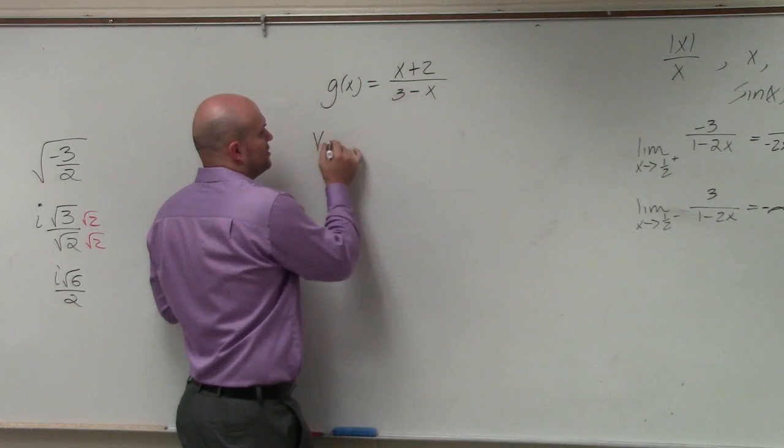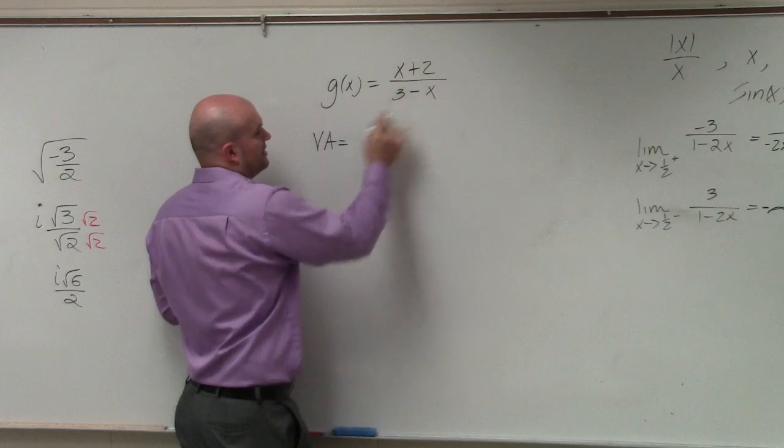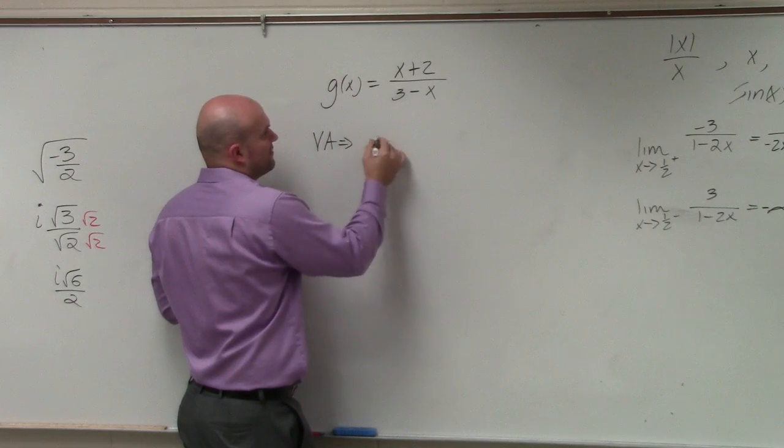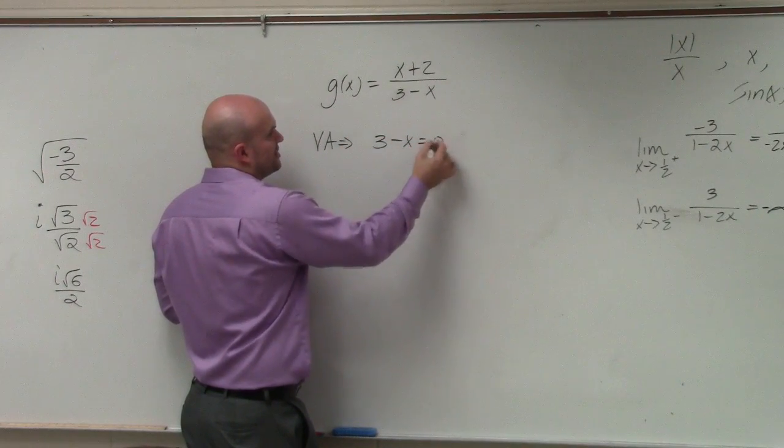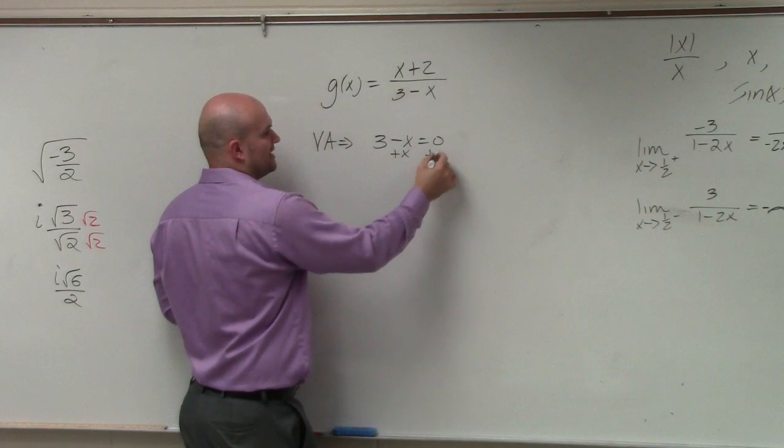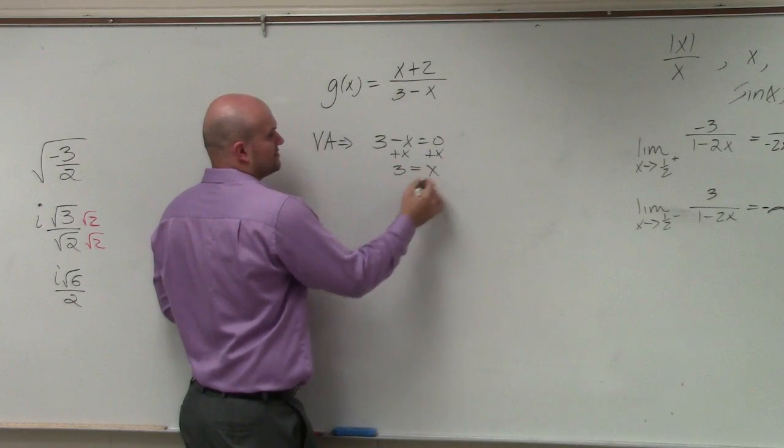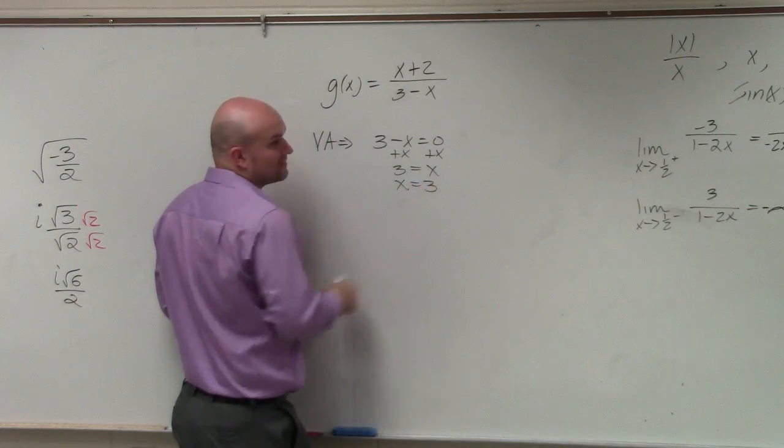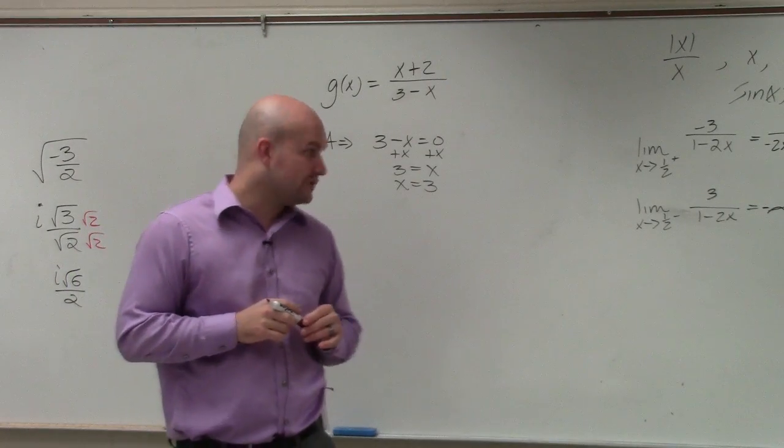So therefore, I'm just going to set my vertical asymptote equal to zero. So I'll just have three minus x equal to zero. And I'll just add an x over here. So I could say three equals x or x equals three. So my vertical asymptote is at the value of x equals three.